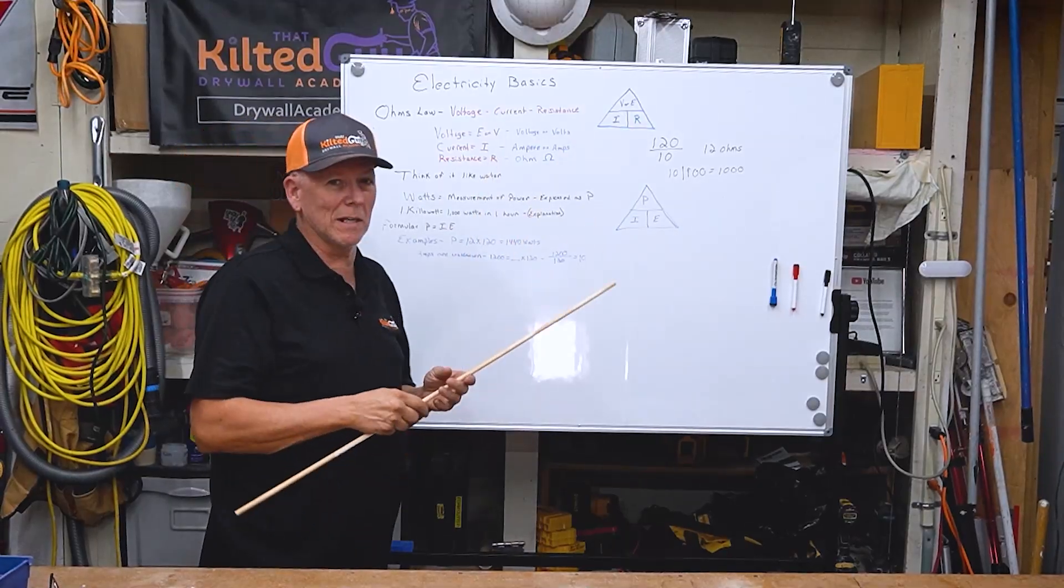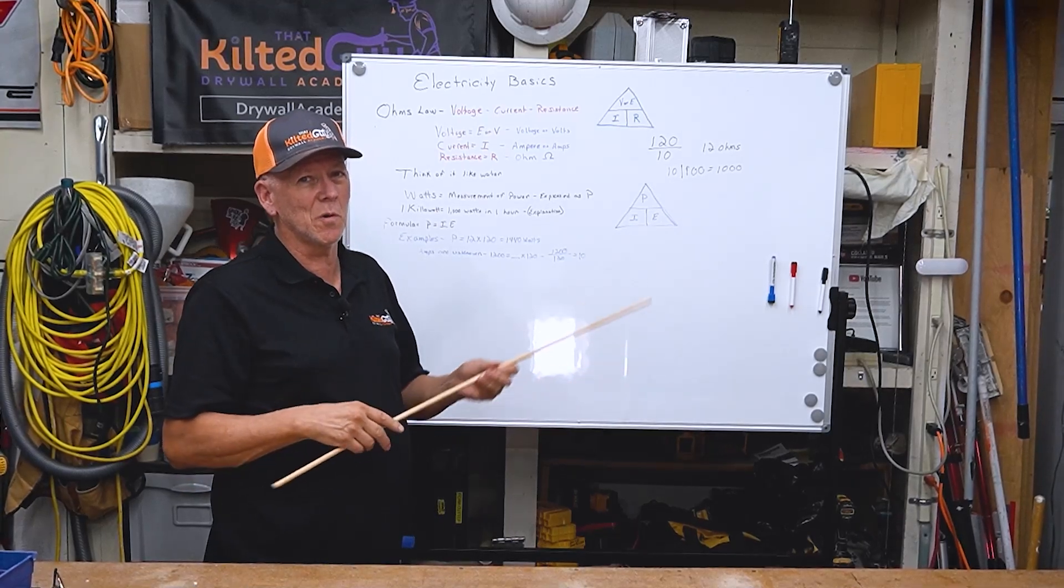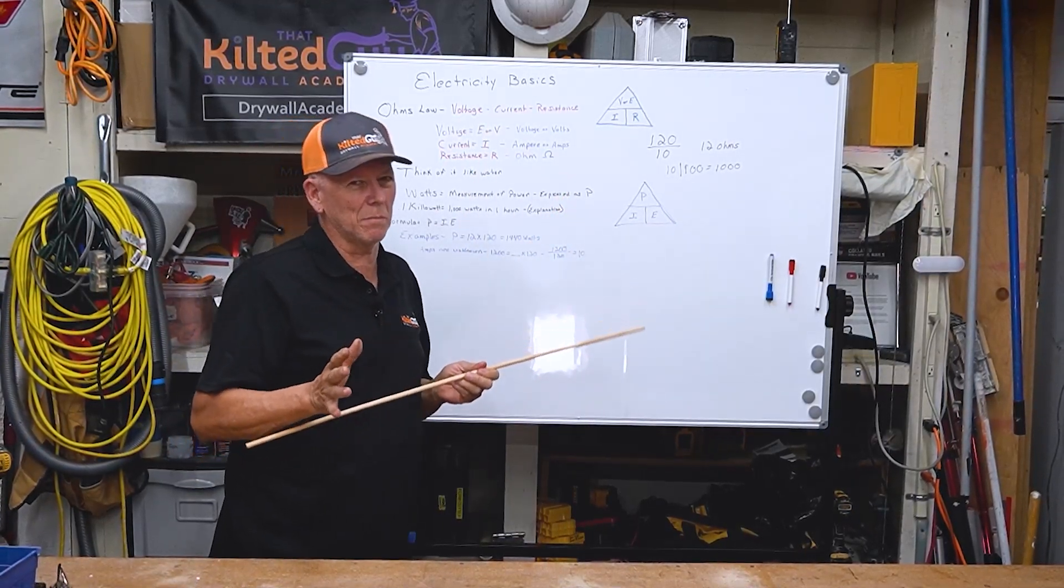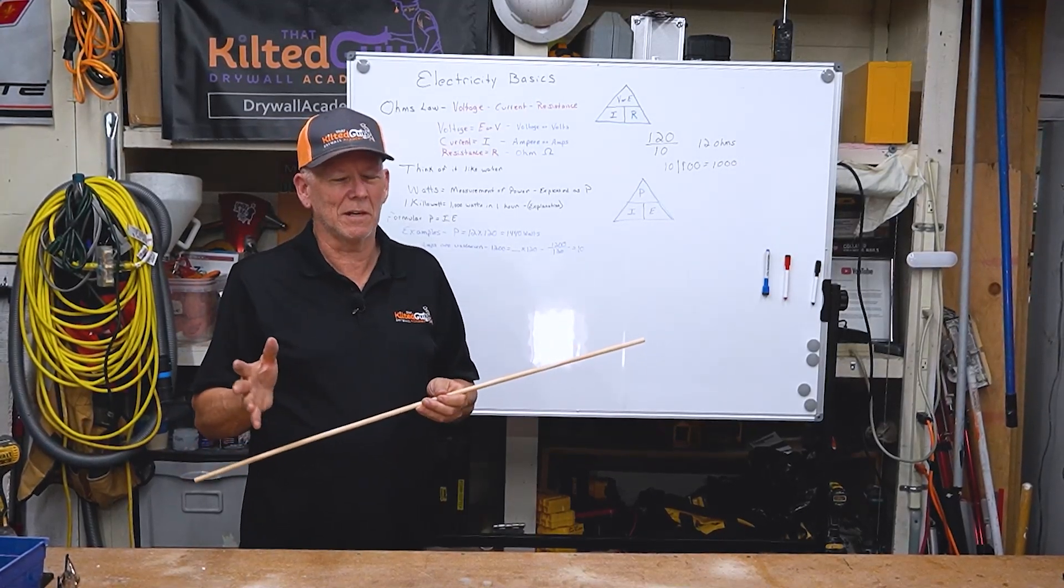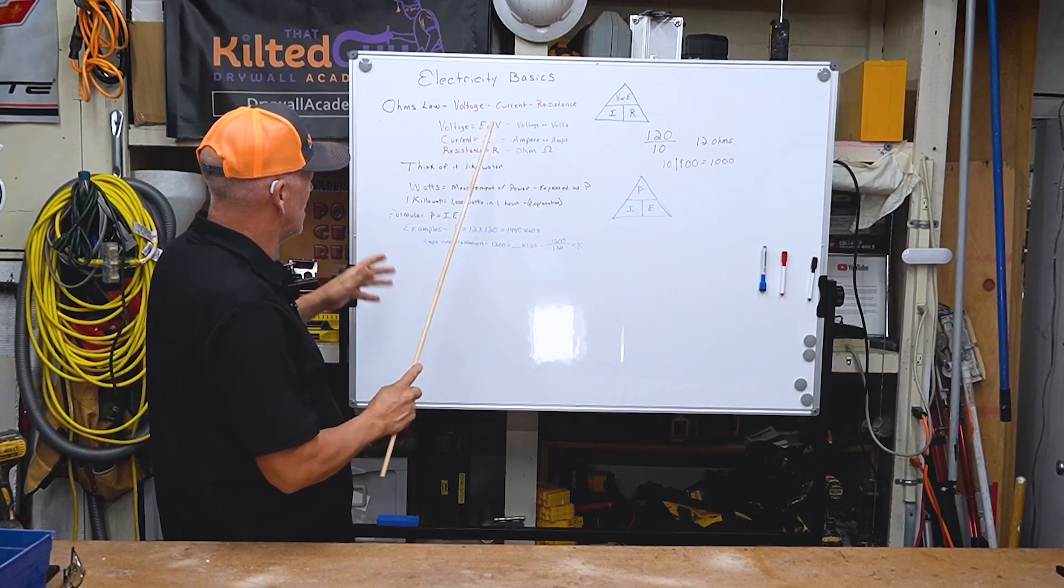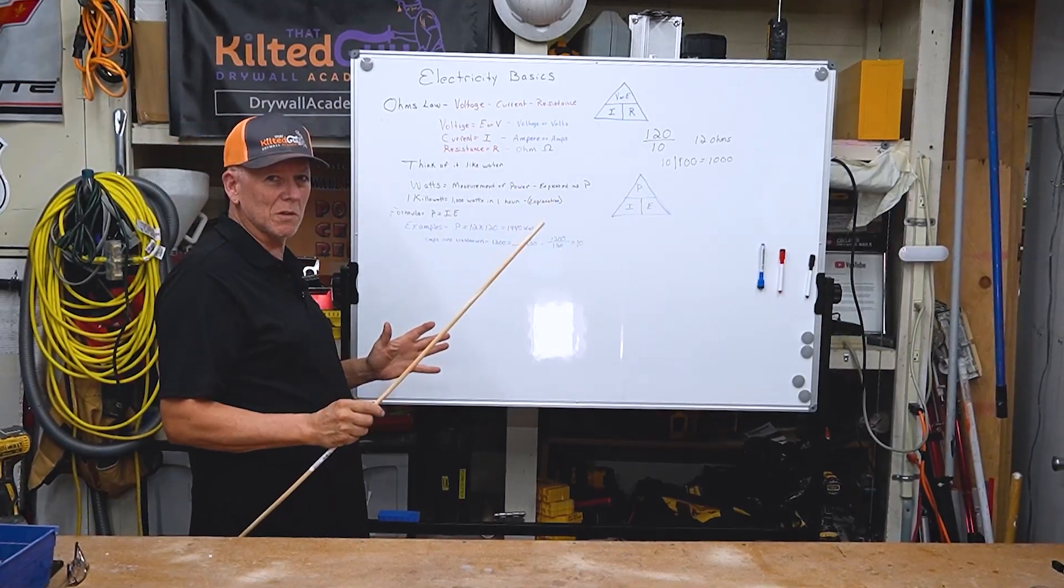Let's say the voltage is 120 and the amperage is 10. So that's V over I division. You divide that, you get 12 ohms. Again, if you knew amperage was 10 and resistance was 100, you'd have a thousand volts. It's just multiplication.